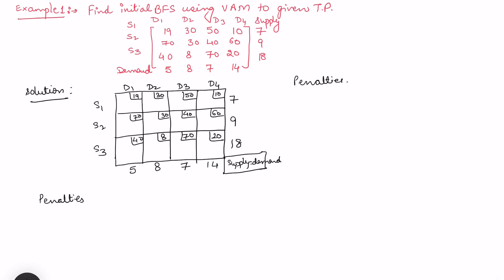In the first row, the least quantity is 10 and the next least is 19, so the penalty is 9. In the second row, the least is 30 and next least is 40, so the penalty is 10. In the third row, the least is 8 and the next least is 30, so the penalty is 22. For columns: the third column penalty is 10 (costs 40 and 50), and the last column penalty is 10 (costs 10 and 20).